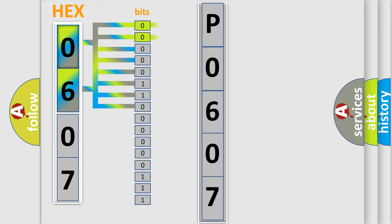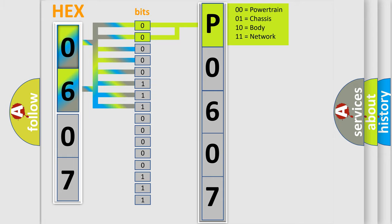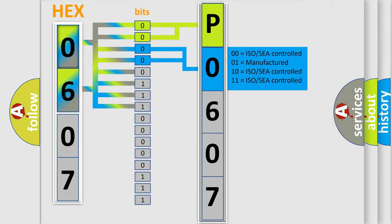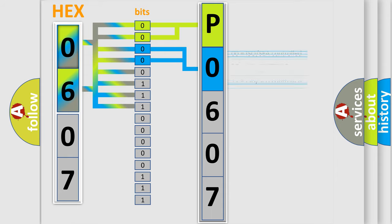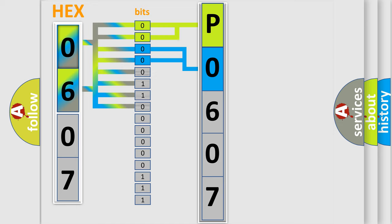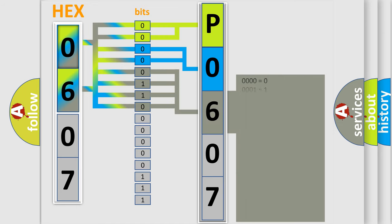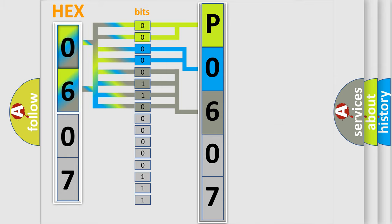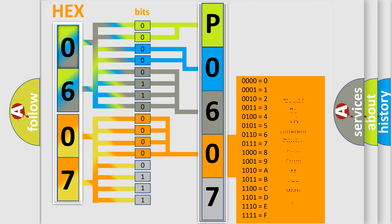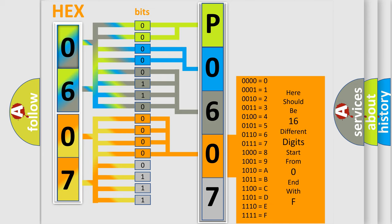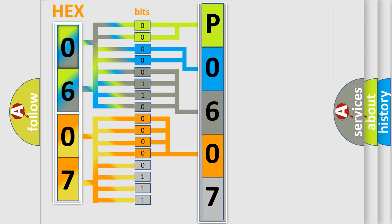By combining the first two bits, the basic character of the error code is expressed. The next two bits again determine the second character. The last bit styles of the first byte define the third character of the code. The second byte is composed of a combination of eight bits. The first four bits determine the fourth character of the code.